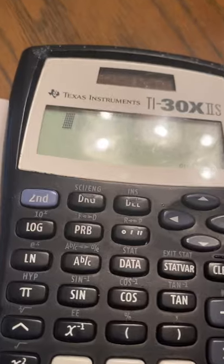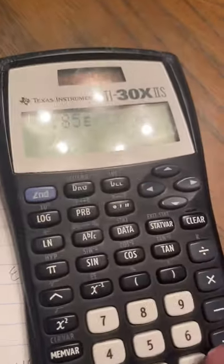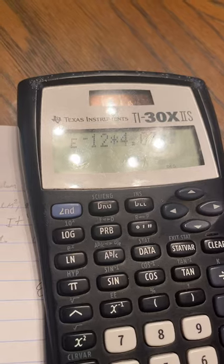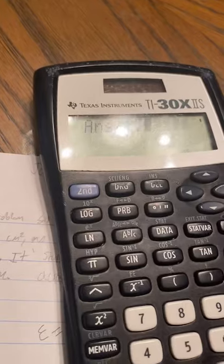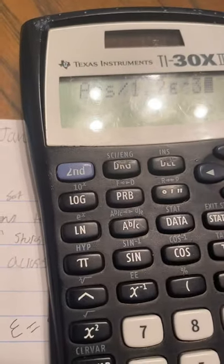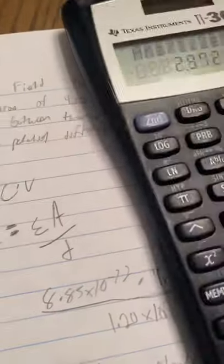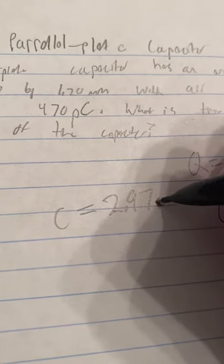Right here, e to the negative 12 times e to the negative 4th, divide that by 1.2 e to the negative 3rd. Okay, so now we get this number right here and that will give us C. So C equals 2.97 times 10 to the negative 12.